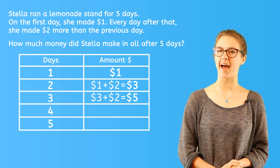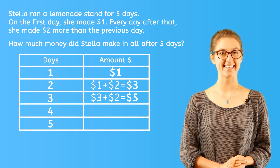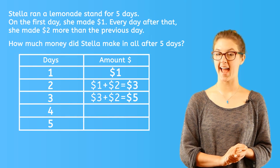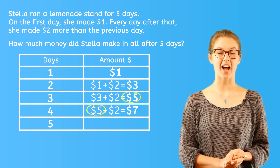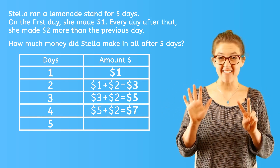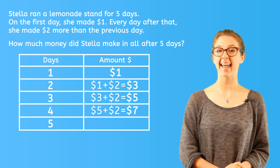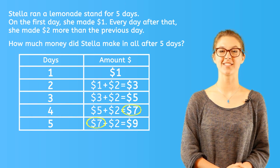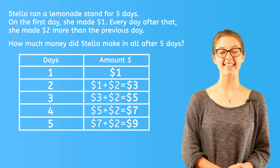Are you beginning to see the pattern? The chart makes it easy to see, doesn't it? On day four, Stella made two dollars more than five dollars, so five dollars plus two dollars equals seven dollars on day four. And on day five, Stella made two more dollars than seven dollars. Seven dollars plus two dollars equals nine dollars.